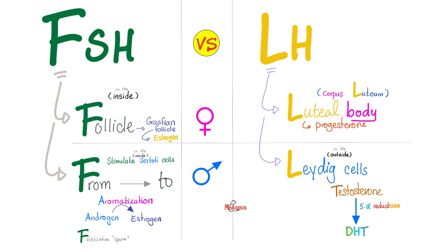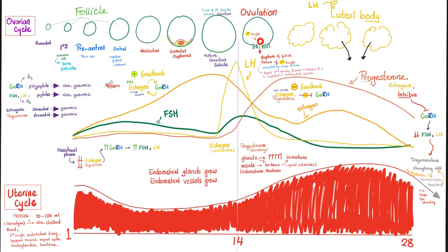We talked about the different functions of FSH and LH before. Here are the follicles of the ovary. In the beginning they mature and secrete estrogen. At the second half of the cycle, after ovulation, the follicle becomes the corpus luteum, which secretes progesterone mainly, and some estrogen, and some inhibin.